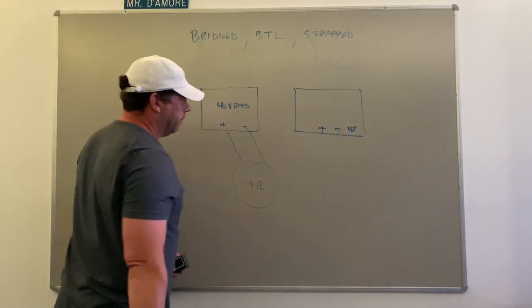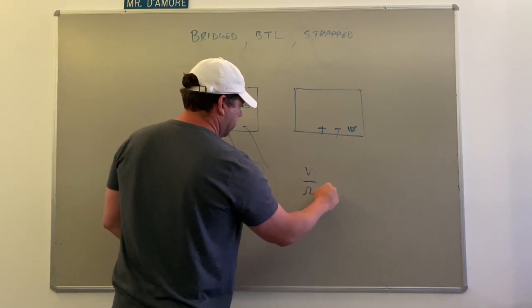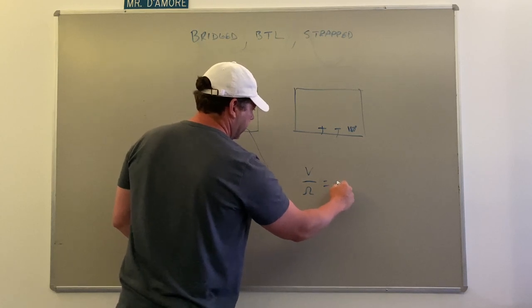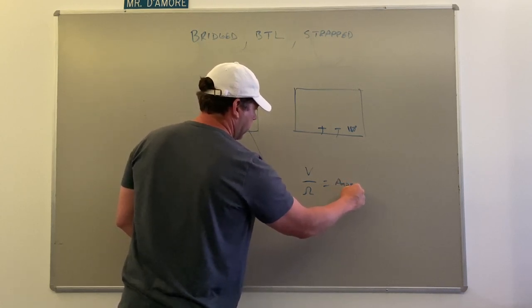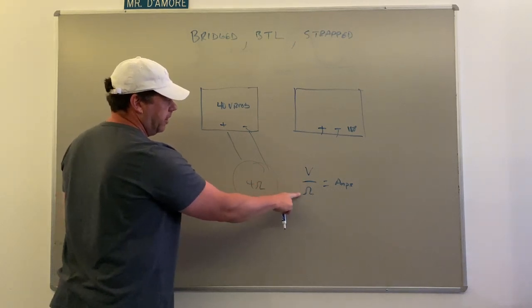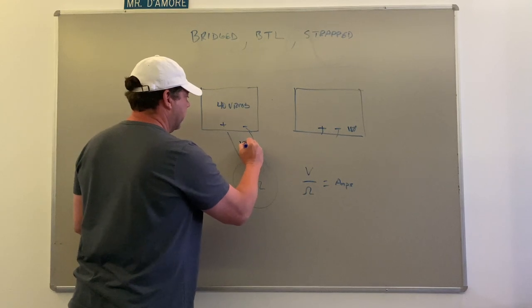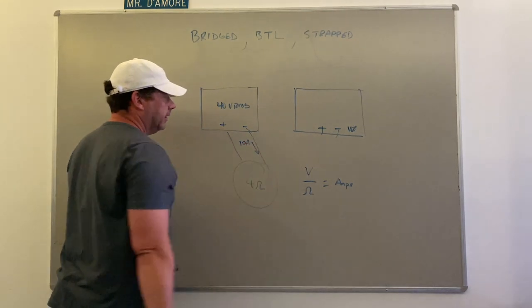This is a 4 ohm load, so let's do some simple Ohm's law: volts divided by ohms equals current. 40 volts divided by 4 ohms, 40 divided by 4, 10. So this has 10 amps of current like this.